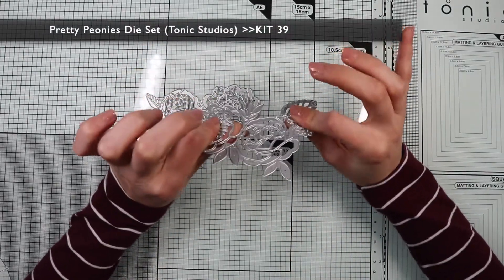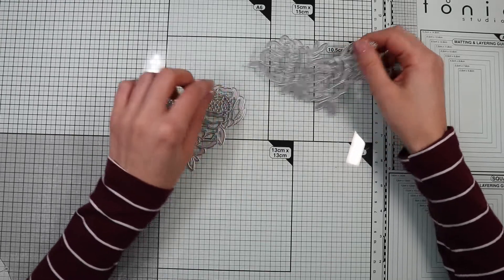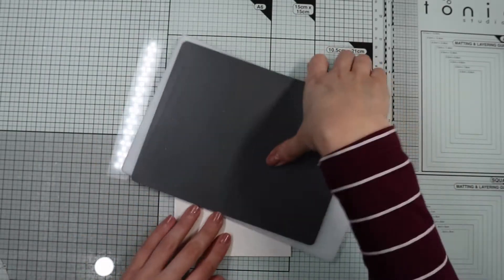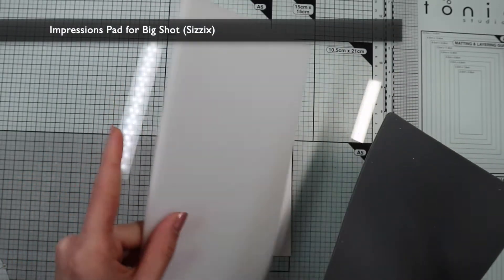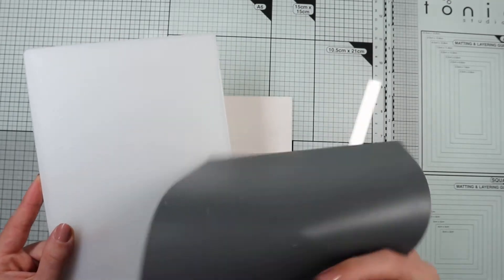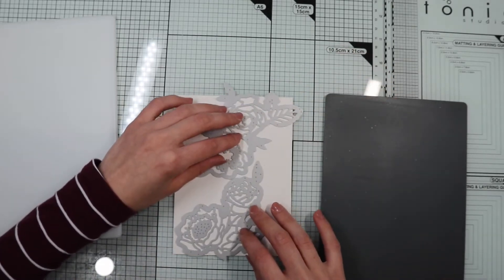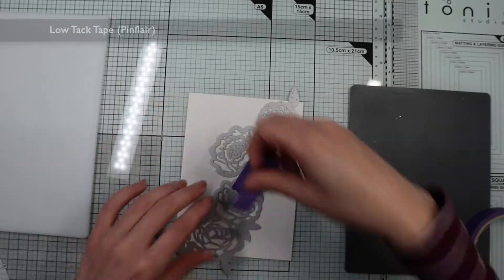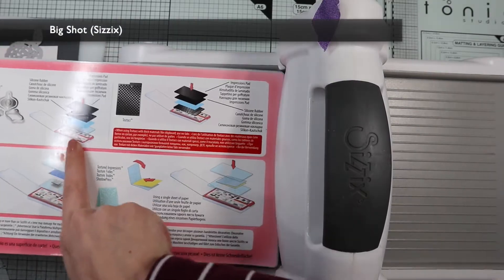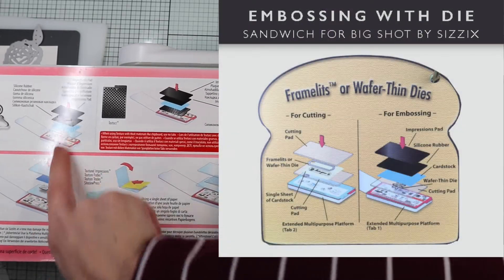To use the die to create embossing on paper, we need special pads for the die cutter machine. In my case, I own a C6 Big Shot machine, so I'll use these two mats: the impression pad and the silicone rubber mat. Follow your die cutter machine instructions for embossing with dies. Now I'm going to position the dies in the main panel and prepare my sandwich, opening the Big Shot platform on face number one.